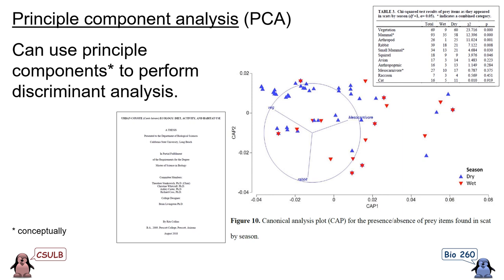She created a canonical analysis plot — using something very similar to principal components analysis — to describe the diet shift. From the figure, we can see that in the wet season coyotes eat fewer vegetables but more mesocarnivores, whereas in the dry season they shift more toward vegetation and away from animal prey. Principal components is mainly used to take a very complex situation with many variables and reduce them to a smaller number that we can understand.